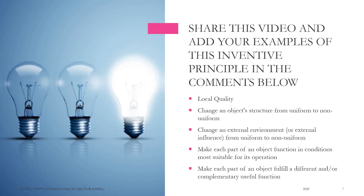Share this video and add your examples of this inventive principle in the comments below. Local Quality Change: change an object's structure from uniform to non-uniform; change an external environment or external influence from uniform to non-uniform; make each part of an object function in conditions most suitable for its operation; make each part of an object fulfill a different and/or complementary useful function.